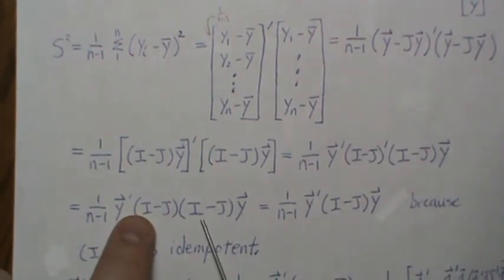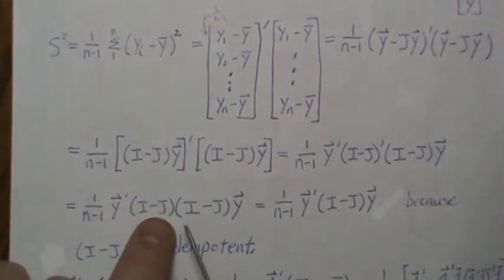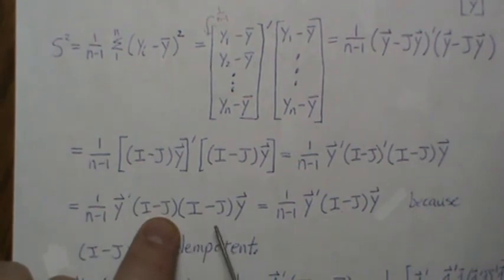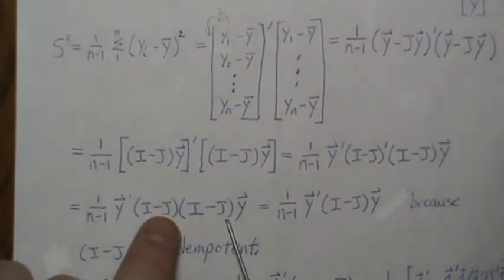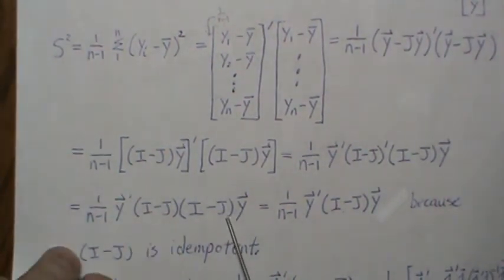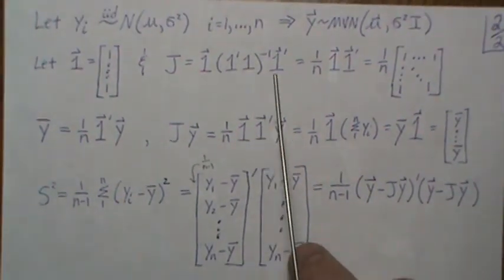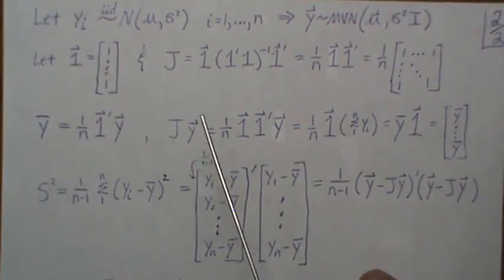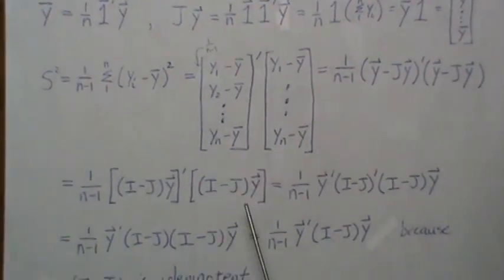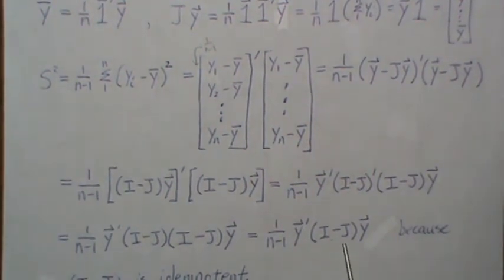And this is the sample variance written in matrix notation, because this is idempotent. And I'm going to leave that as a proof to you to prove when you multiply this out. The way you do it is I times I, I times J, J times I, and J times J. And then it's easy to show that J times J is idempotent also, and you get J back, which then it all reduces to this.